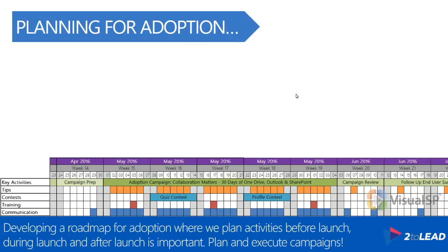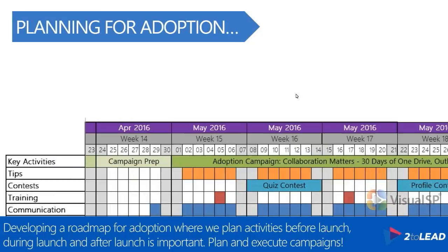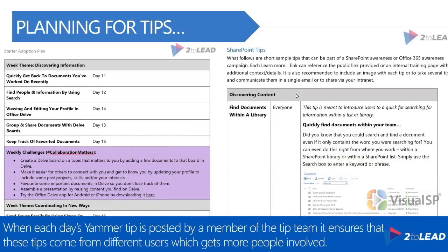So let me give you some examples. If we dig into tips, what you do is maybe create a series of tips. Let's say we do a 25-day campaign — a tip per day. Each of the tips we'll pre-build; we'll give them the text. You can see on the right-hand side an example of one.